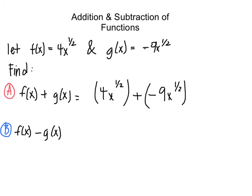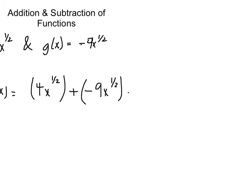Remembering our properties from the previous section, we can have 4 minus 9 times x to the 1 half. So ultimately we have negative 5x to the 1 half.